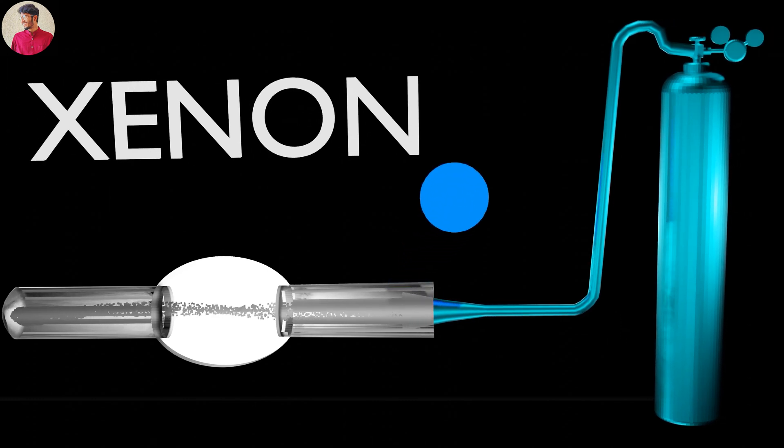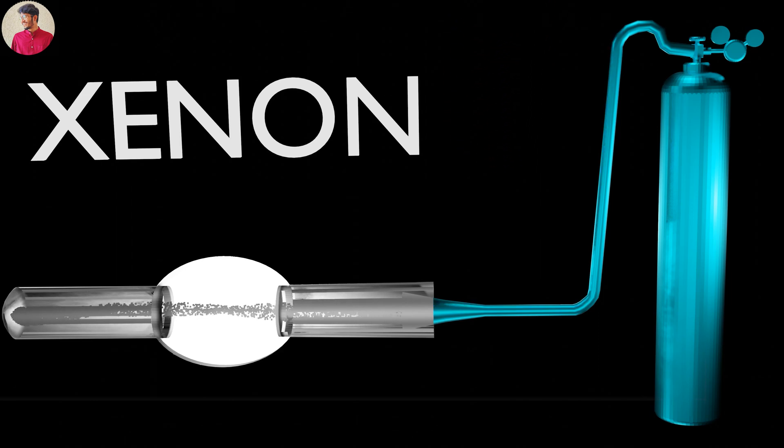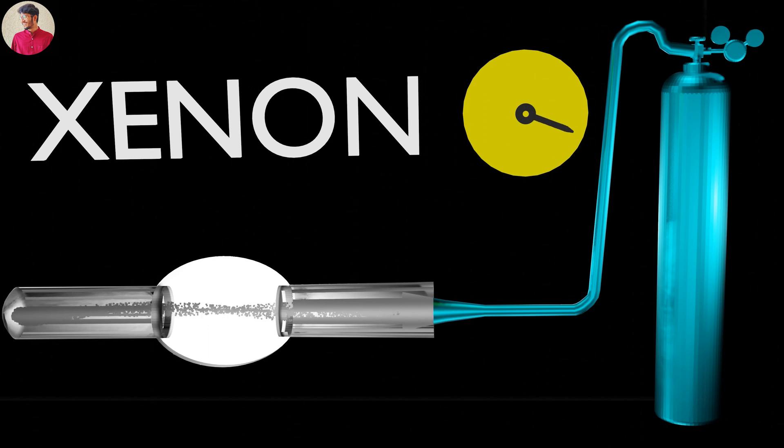Xenon is what's called a noble gas, a clear, odorless element that's very stable under typical conditions on earth, very much like helium. The pressure inside the bulb is about 30 bars.